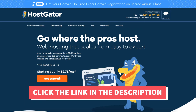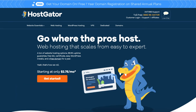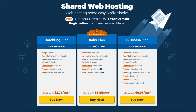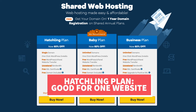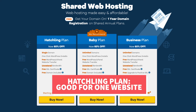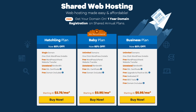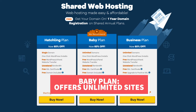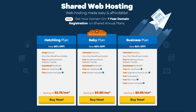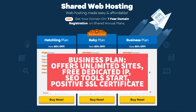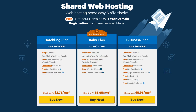Once you click the link in the description below you'll be at the Hostgator homepage. Click the Get Started button. You'll now see three different web hosting plans: the Hatchling, Baby, and Business plan. The Hatchling plan is great if you're going to have one site. If you're going to have more than one site, select the Baby plan as it offers unlimited sites. The Business plan comes with unlimited sites and includes a free dedicated IP, Hostgator's SEO tool start add-on, and a free upgrade to a positive SSL certificate. I recommend going with the Hatchling or Baby plan when starting out, and you can always upgrade as your site traffic and revenue grows.